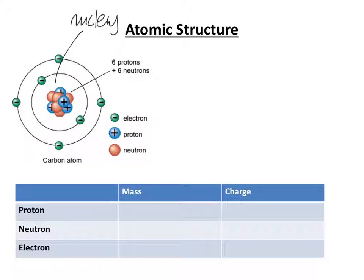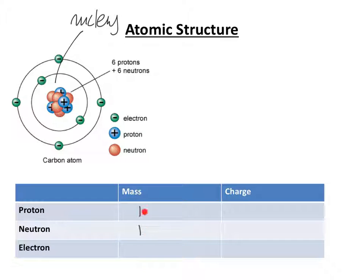We'll look at electronic structure or electronic arrangement in a moment. But before we go any further, it's important that we outline the fundamental properties of these sub-atomic particles. Protons have a relative mass of one. They are the same in mass as a neutron, so we give them both a relative mass of one. An electron is far smaller and far lighter than a proton or a neutron — in fact, you need 1,837 electrons to make up the same mass as a neutron or a proton.